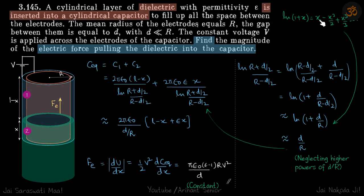X is D/R, so we'll approximate this to D/R, neglecting higher powers. We'll replace this denominator by D/R and simplify: this becomes 2πε₀/(D/R) × (L - X + εX). We have a nice equation for C_equivalent.